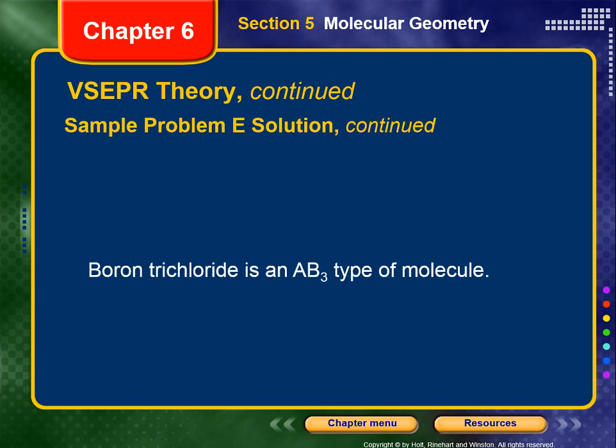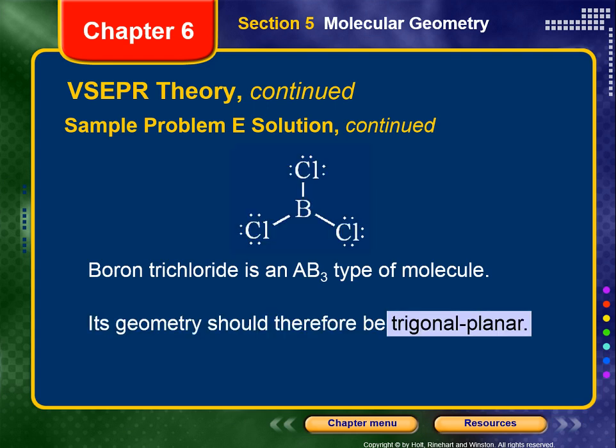We're not just doing Lewis structures here — we're trying to predict the molecular geometry. We now know that boron trichloride is in AB3 format, so the geometry should be trigonal planar. You will have to associate — meaning memorize — the AB3 format with a trigonal planar shape.